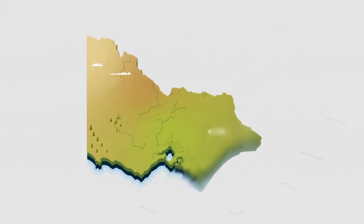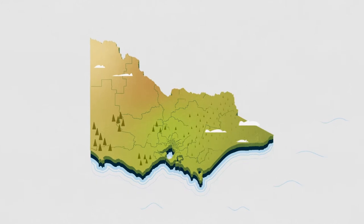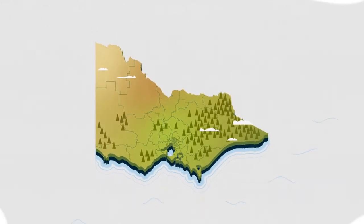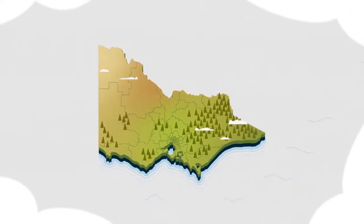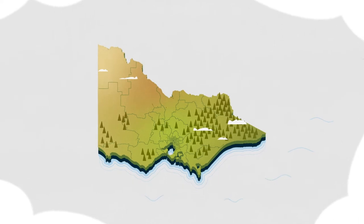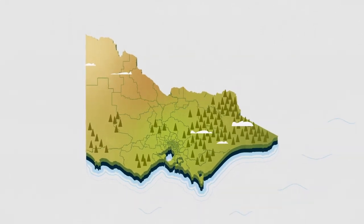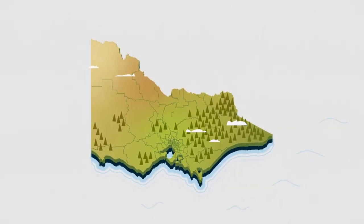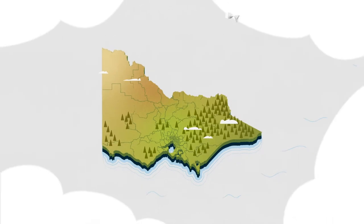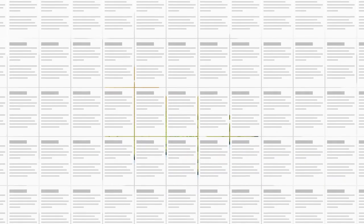Help to shape your state. Victorians can help to shape their state in the redivision of the Victorian electoral boundaries. Victoria's state electoral boundaries are regularly redrawn to make sure that they're approximately equal in numbers of voters, and Victorians are invited to contribute their ideas about the boundaries.